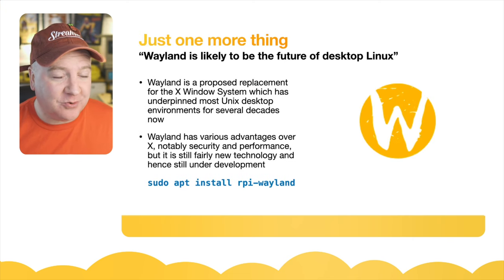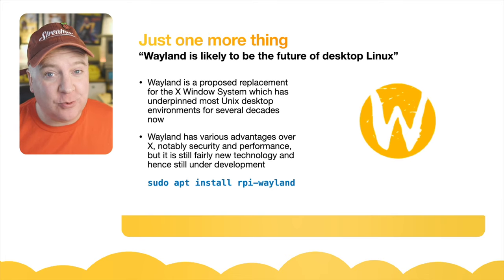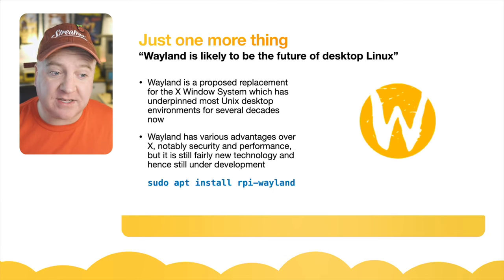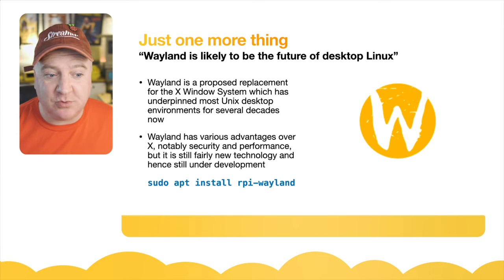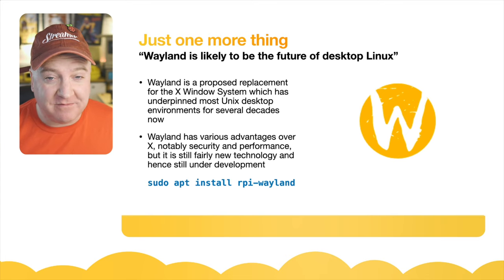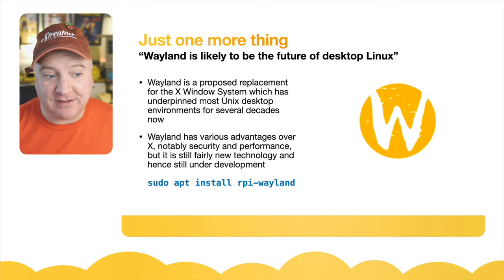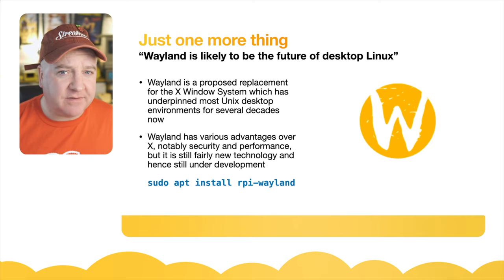There is also one more new thing: you might have heard of Wayland. Raspberry Pi have described it as 'likely to be the future of the desktop for Linux.' Wayland is a proposed replacement for the X Window System, which has underpinned Unix desktop environments for several decades. Wayland has various advantages over X, most notably performance. It's still quite new technology and there's still a lot under development — in fact, they don't recommend trying it unless you're on an experimental system.